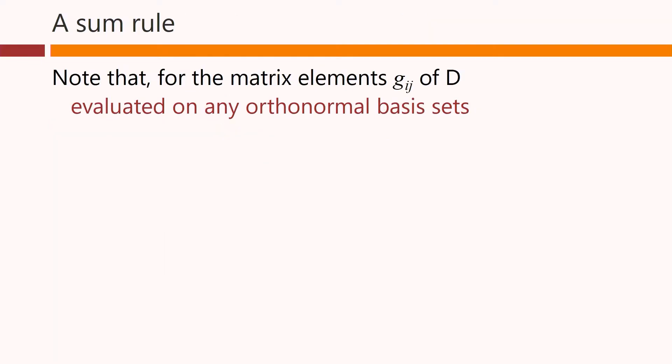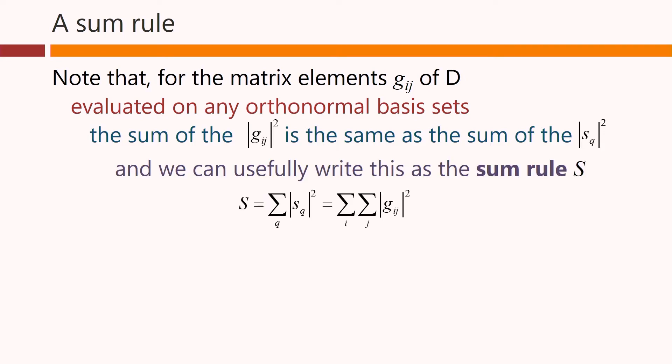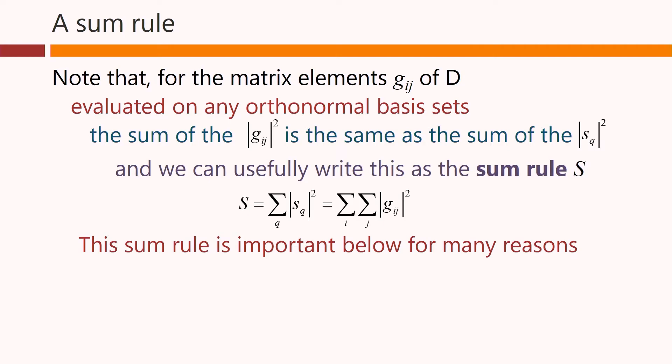Note that for the matrix elements of D, which we could call g_ij, evaluated on any orthonormal basis sets we like, the sum of the modulus squared of these matrix elements is the same as the sum of the modulus squared of the singular values. And we can usefully write this as a sum rule S. This sum rule is important below for many reasons. It can be evaluated without solving the problem, and it gives a limit on the number and strength of connections.